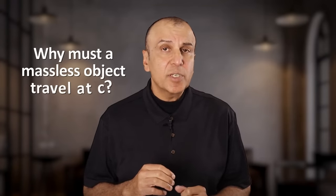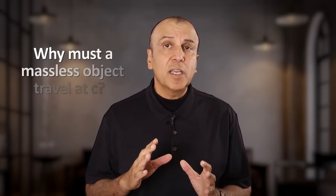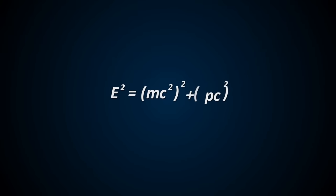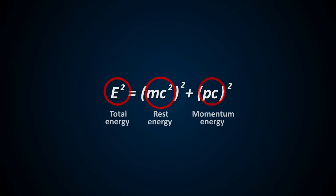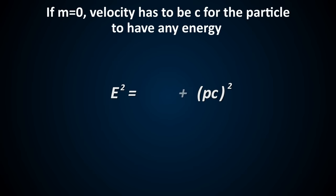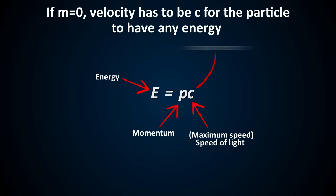Why is it the case that a massless object must travel at the maximum speed? This can best be seen by looking at this energy-momentum relation, where total energy is equal to the rest energy plus the momentum energy. If there is no mass, that is, if m is zero, then since the object must have some energy to exist, the velocity can only be c, the maximum velocity.